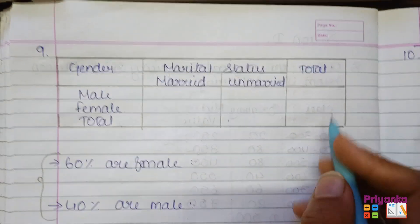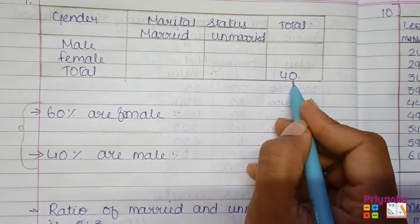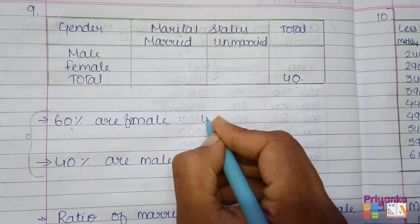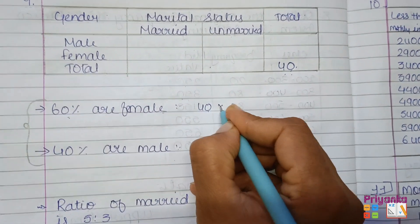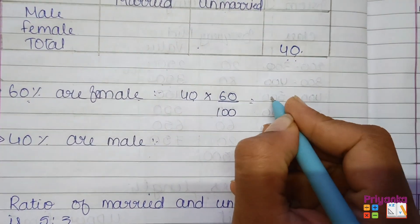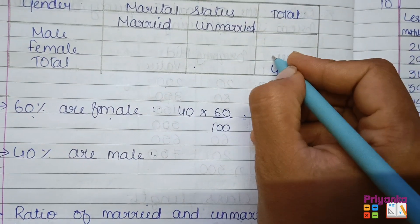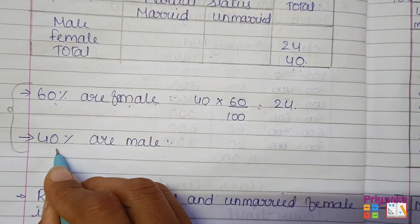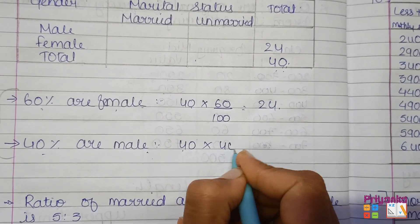Total workers are 40. Out of this, 60% of 40 are female: 60% of 40 equals 24 females. For males, 40% of 40 equals 16 males.